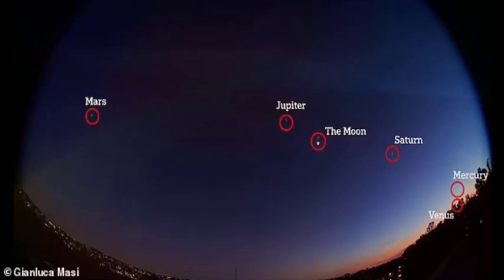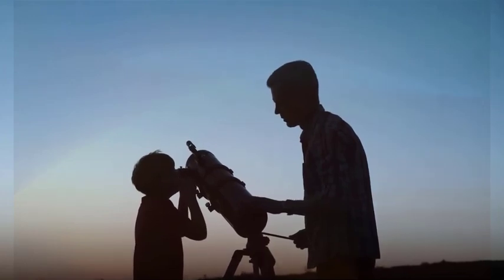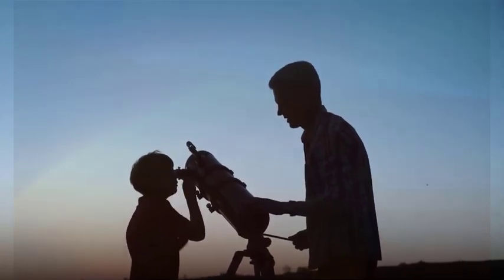Mercury, Venus, Mars, Jupiter, and Saturn can all be seen with the naked eye, while Uranus and Neptune are possible to spot with binoculars or a telescope.